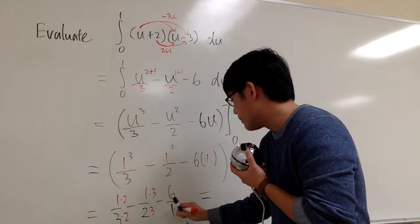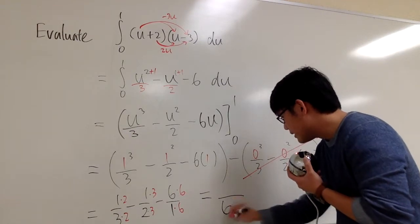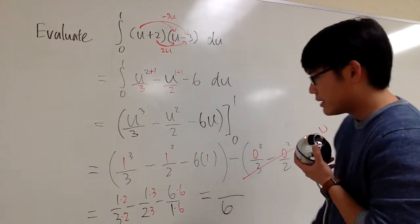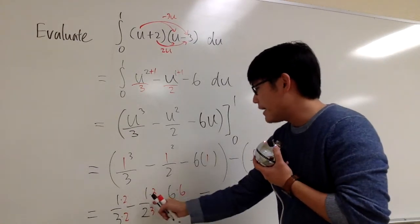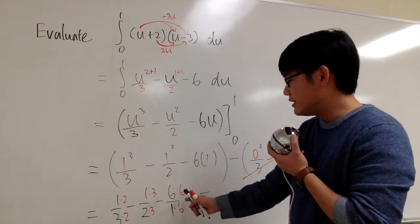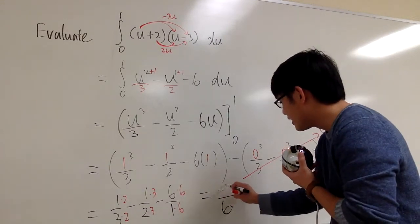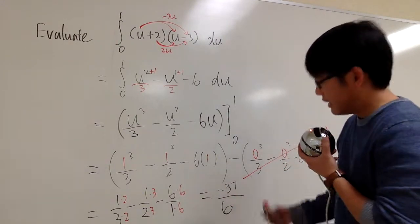And multiply by 6 right here. So the common denominator will be 6. And what's on the top? This is 2 minus 3, which is negative 1. Minus 36. Negative 1 minus 36 will give you negative 37. That's it.